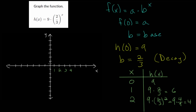Let's start plotting these points using a scale of 2 for the y-axis. The graph goes through (0, 9), then (1, 6), and (2, 4). It just gets smaller and smaller — if you plug in x = 3, you take 4 and multiply by 2/3 again, giving 8/3 or about 2.6 repeating.